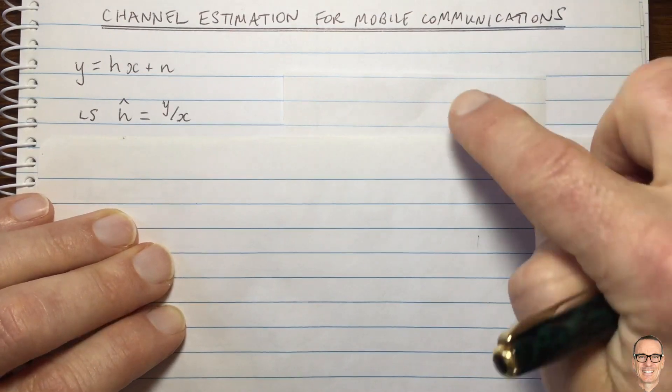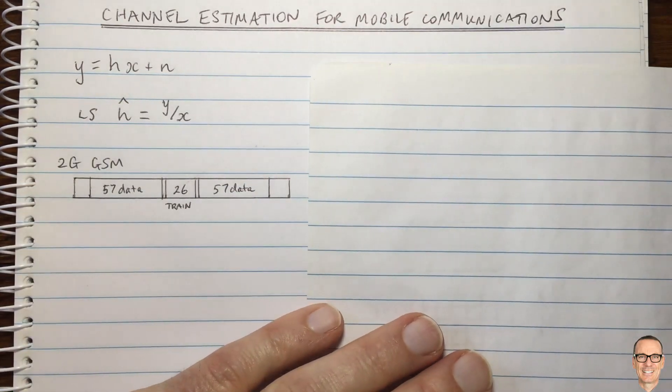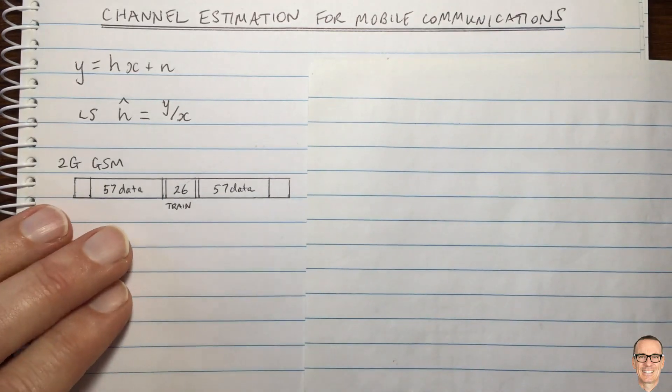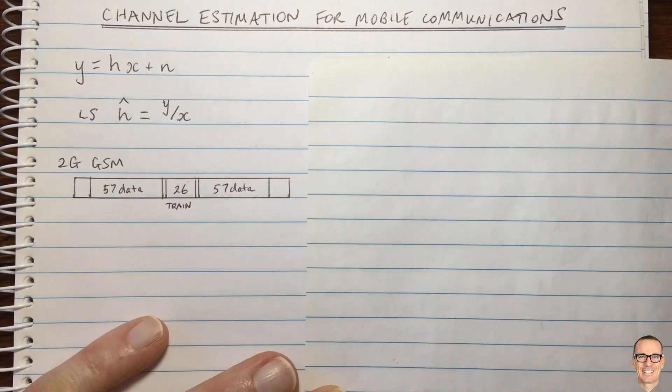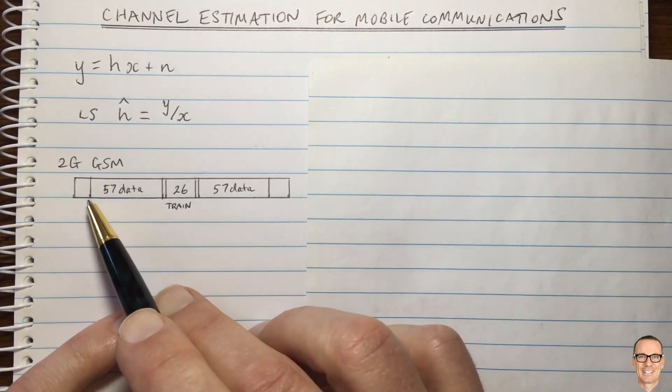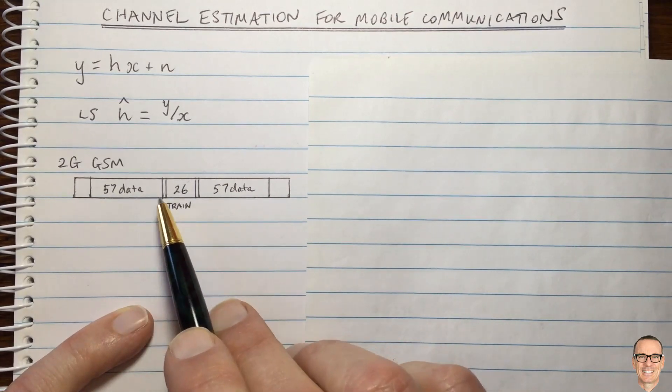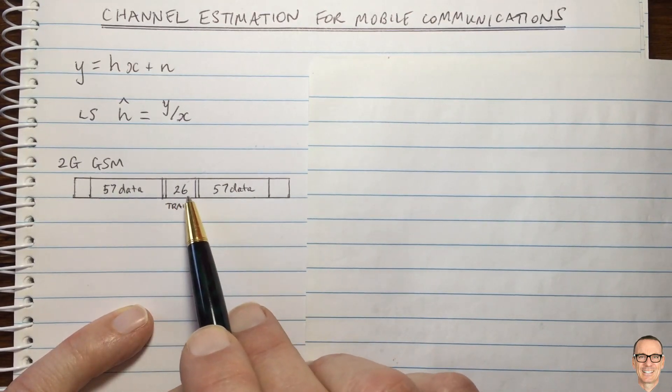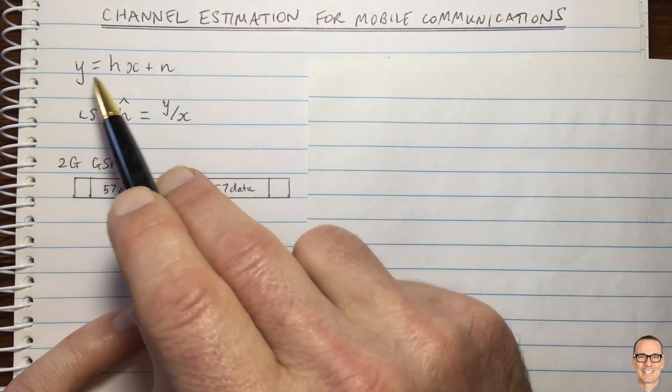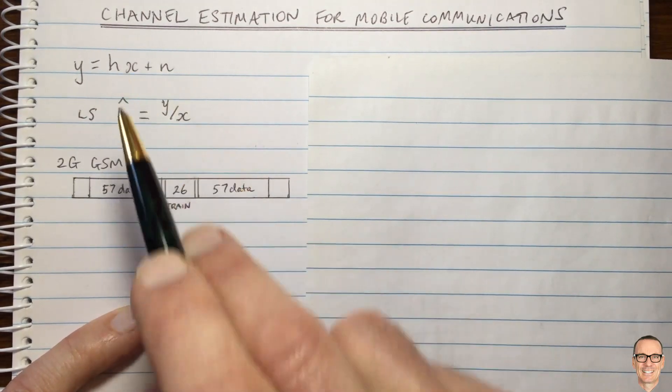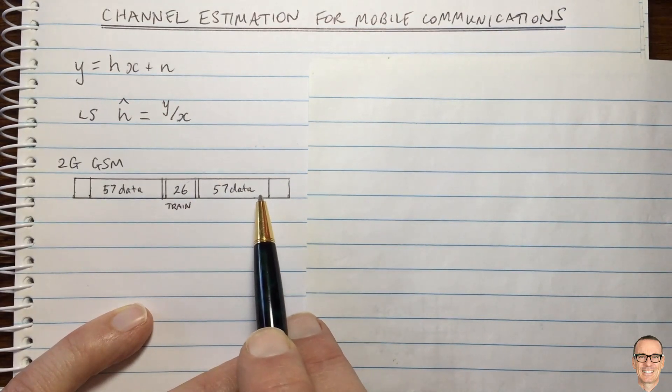Let's look at maybe the earliest digital mobile standard, the second generation GSM. The GSM packet is made up of some header bits and tail bits, 57 data bits, and in the middle of the packet there's 26 training bits. They don't just use one training symbol, there are 26 bits for training and then 57 data symbols.